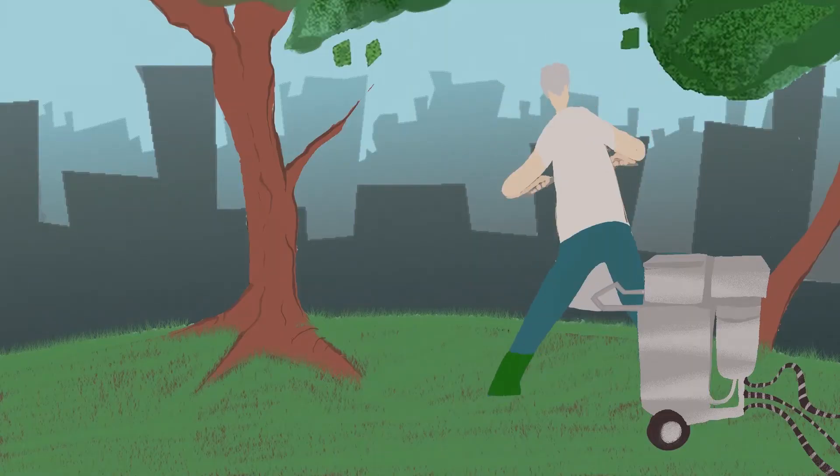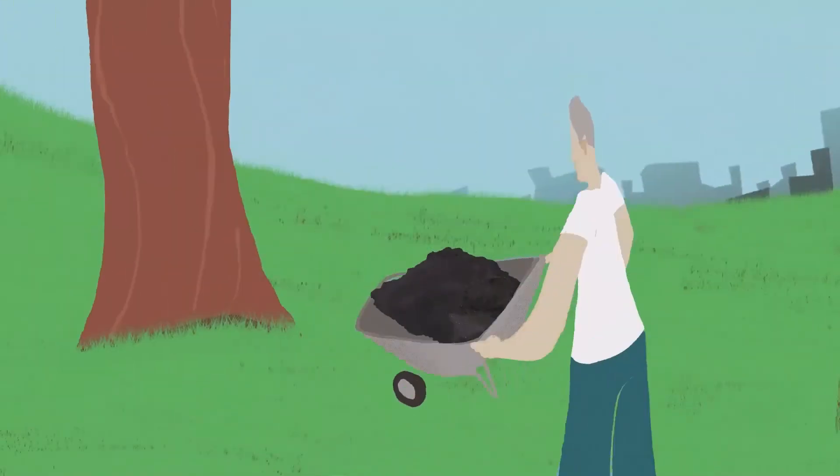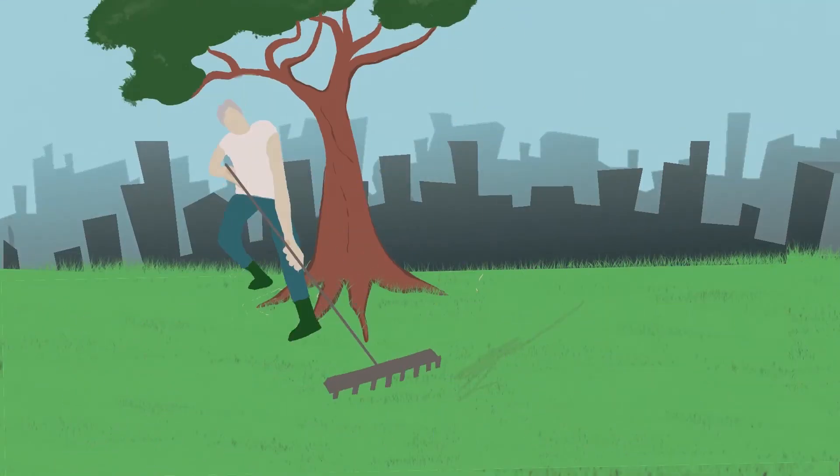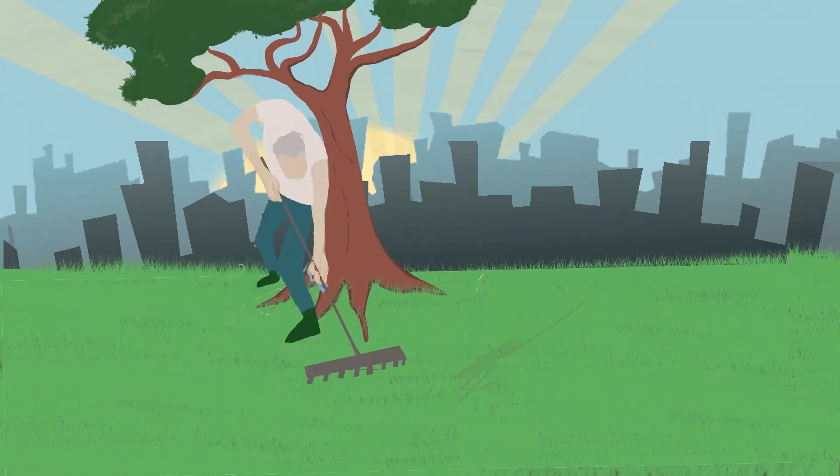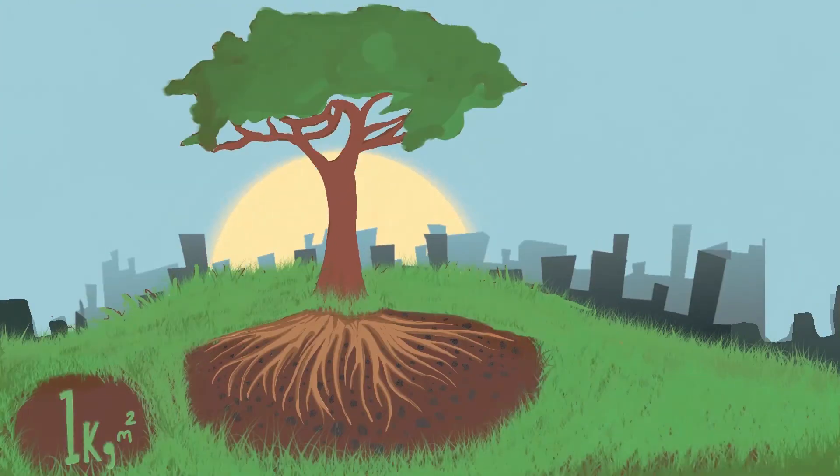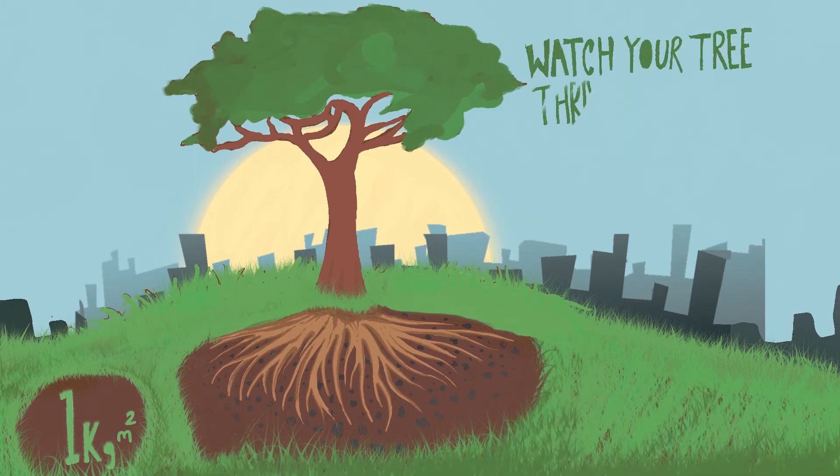For an established tree, you can either use a geo-injector to blow Tree Soil Improver deep into the soil without disturbing the roots or apply it as a top dressing. But make sure you mulch over to protect the biology from the sun's ultraviolet rays. You'll need at least one kilo per square meter, then sit back and watch your tree thrive.